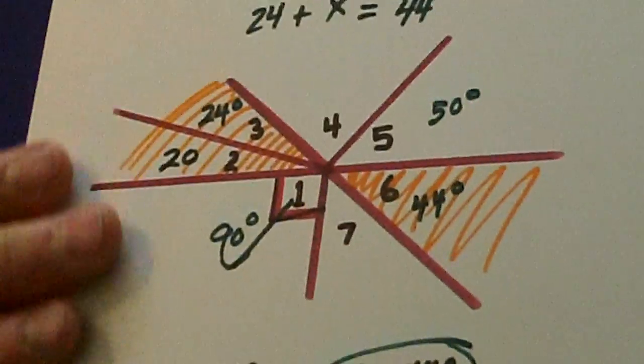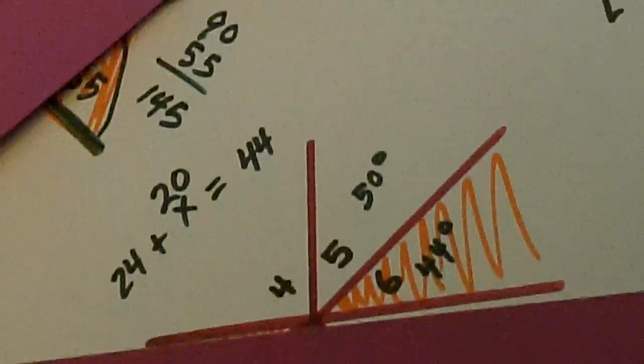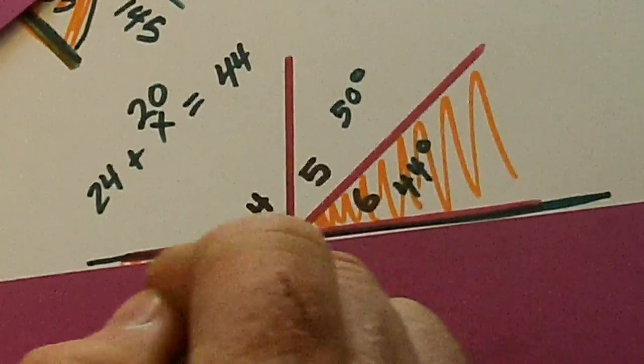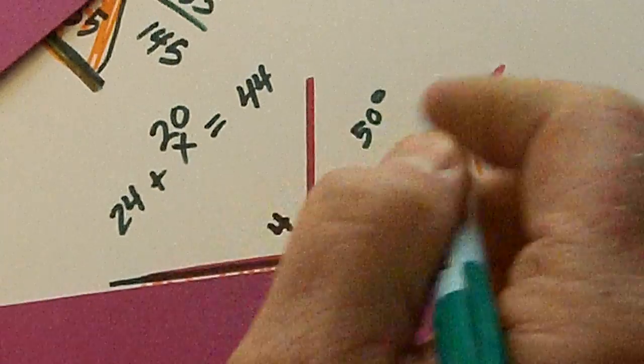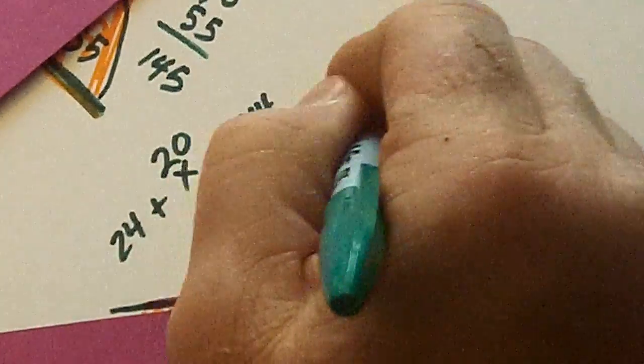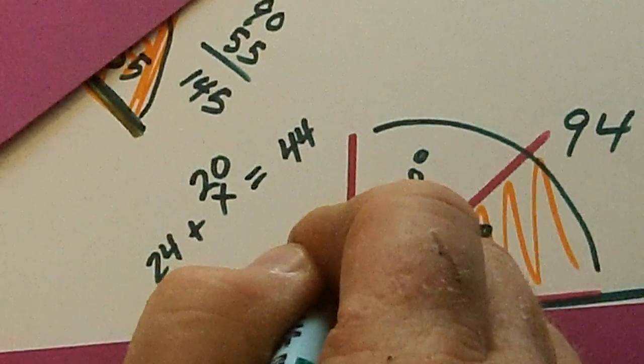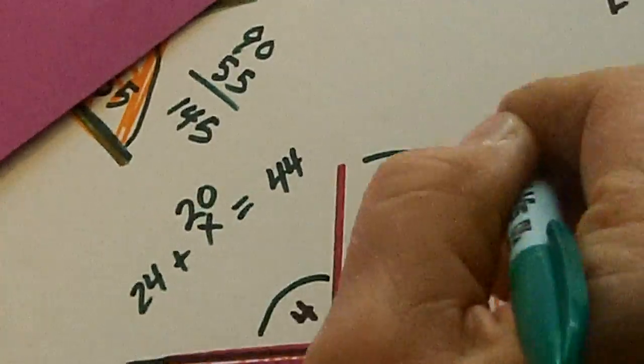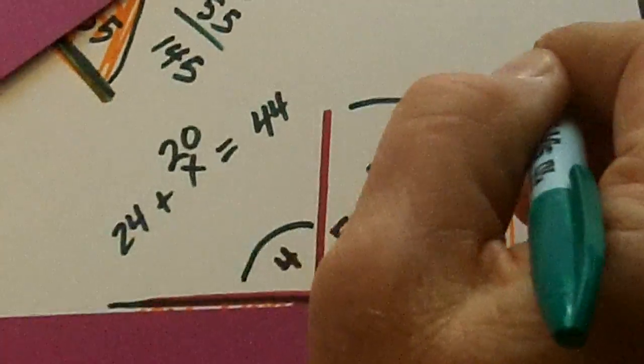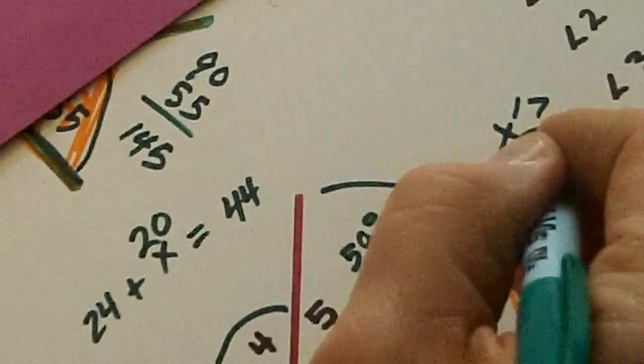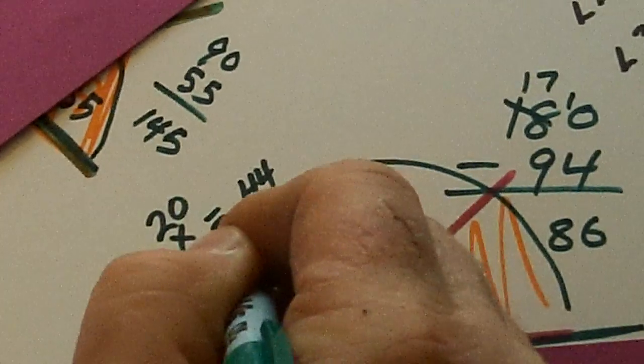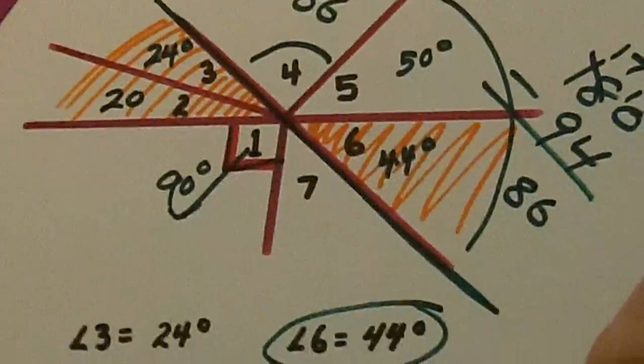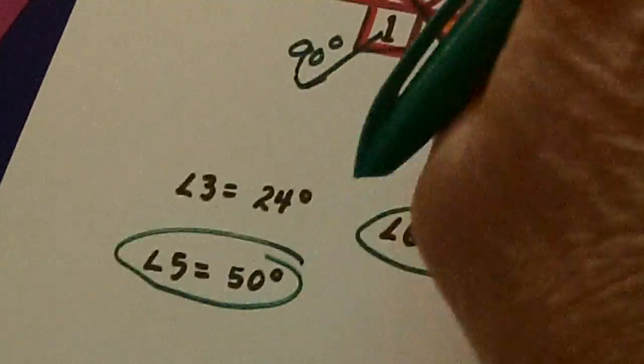Now watch this. Supplement. Right here. Straight angle. 44 and 50 is, right here, is 94. So to find number 4, it's 180 minus 94. Borrow. And so we get 86. So 4 is 86. Angle 4 is 86 degrees.